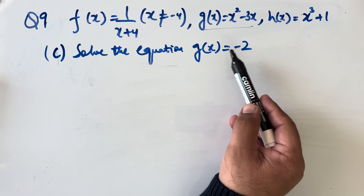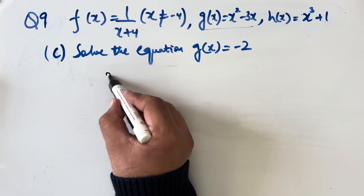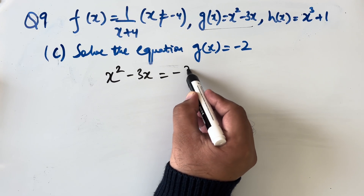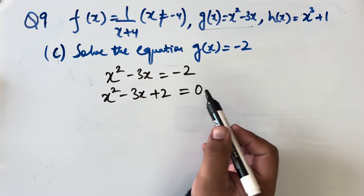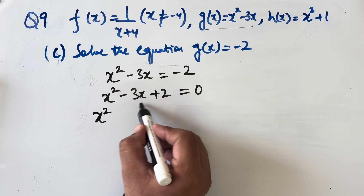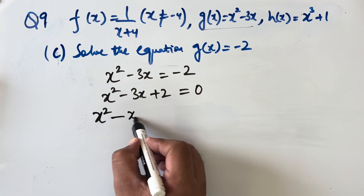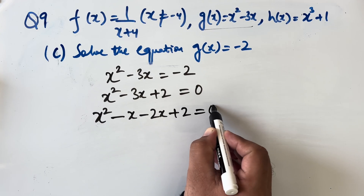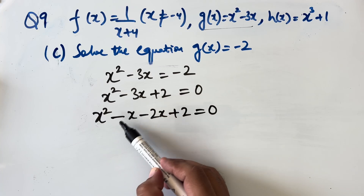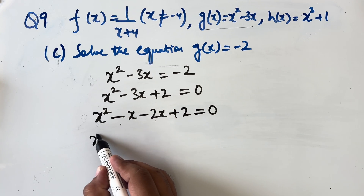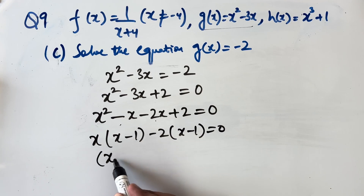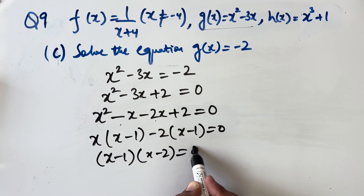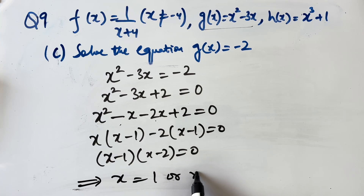Question 9c: solve g(x) = −2. So x² − 3x = −2, giving x² − 3x + 2 = 0. Factorizing by splitting the middle term: x² − x − 2x + 2 = 0, so x(x − 1) − 2(x − 1) = 0, giving (x − 1)(x − 2) = 0. Therefore x = 1 or x = 2.